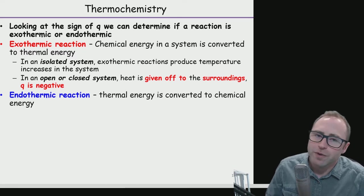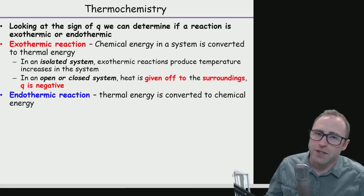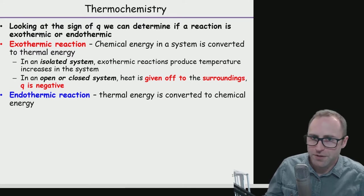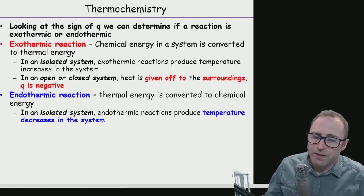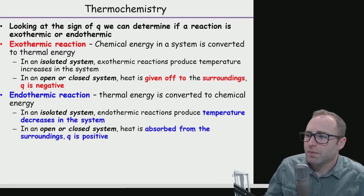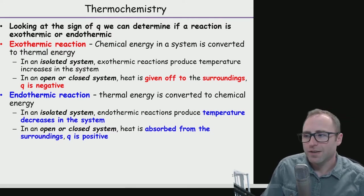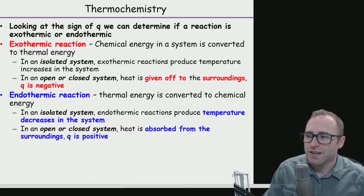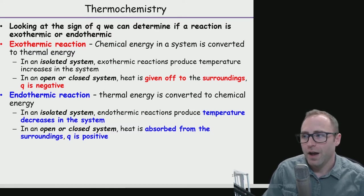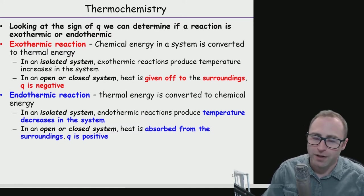An endothermic reaction is kind of the opposite: thermal energy is converted into chemical energy. In an isolated system this produces a decrease in temperature, but in open and closed systems the heat is absorbed from the surroundings into the system. So Q for an endothermic reaction is going to be positive. For exothermic Q is negative; for endothermic Q is positive.